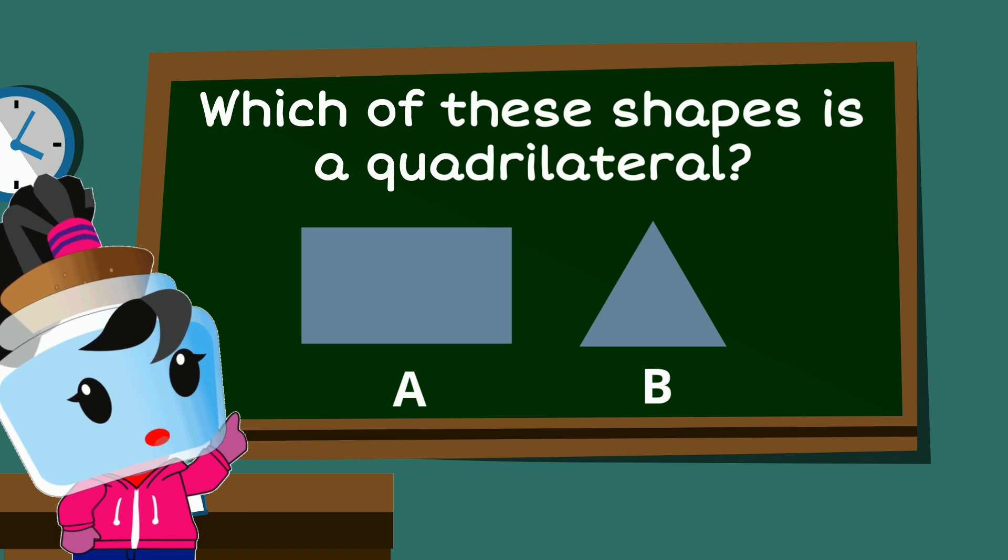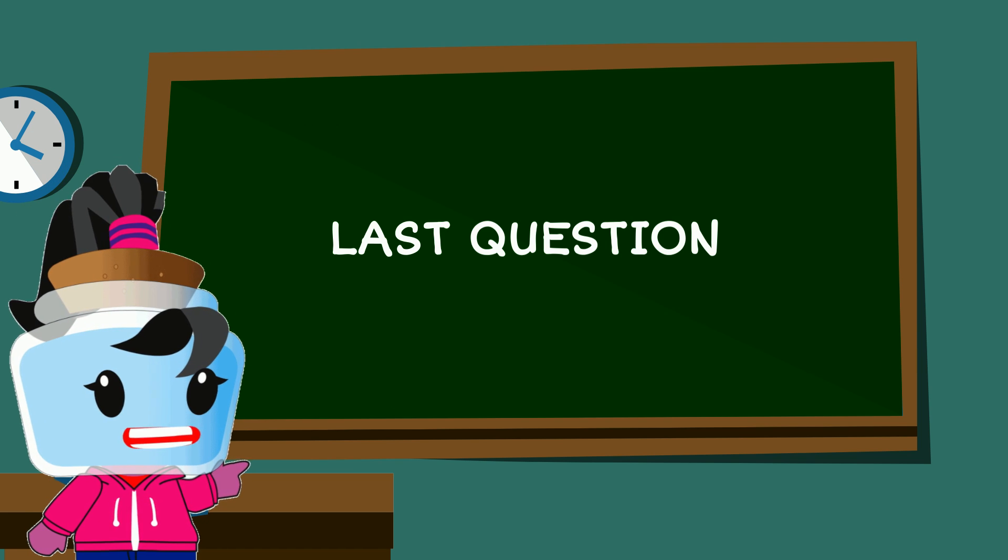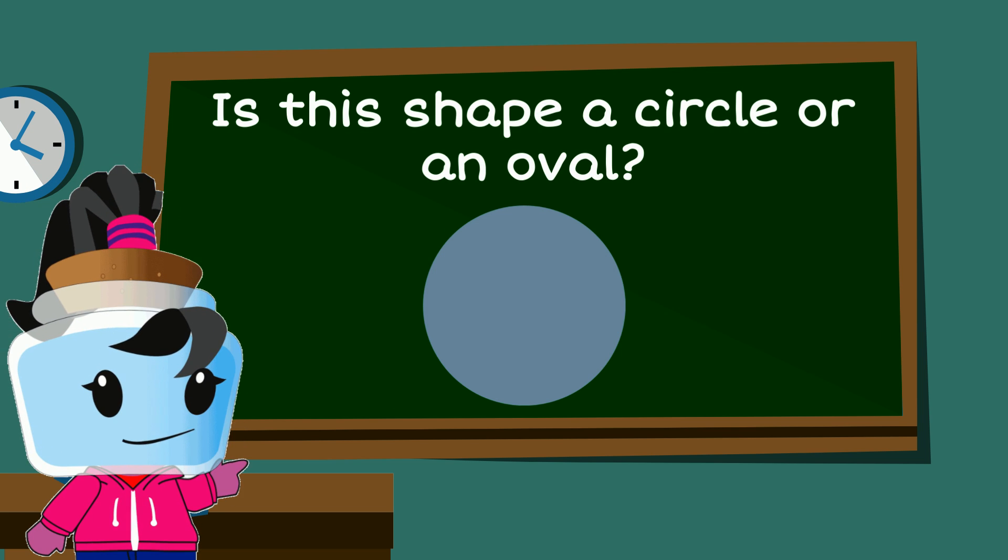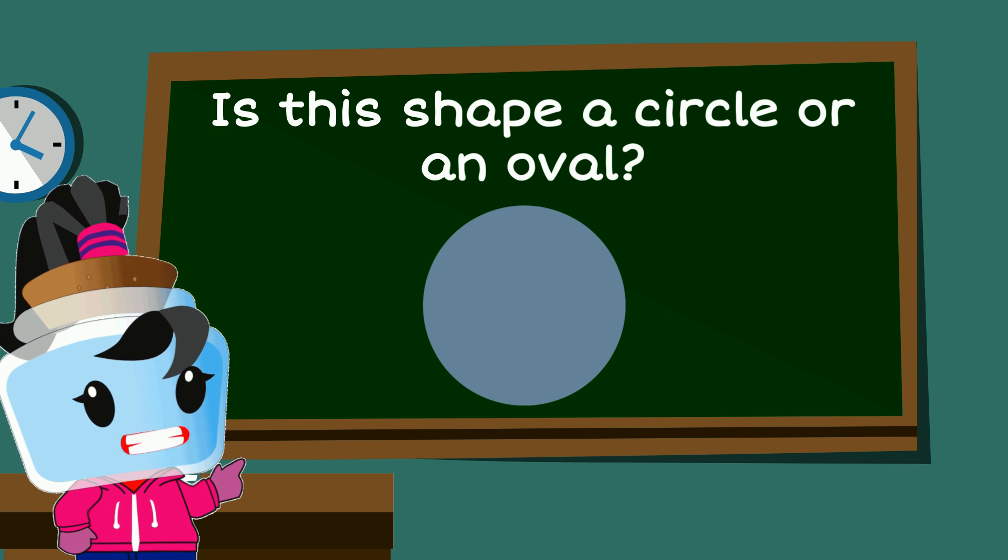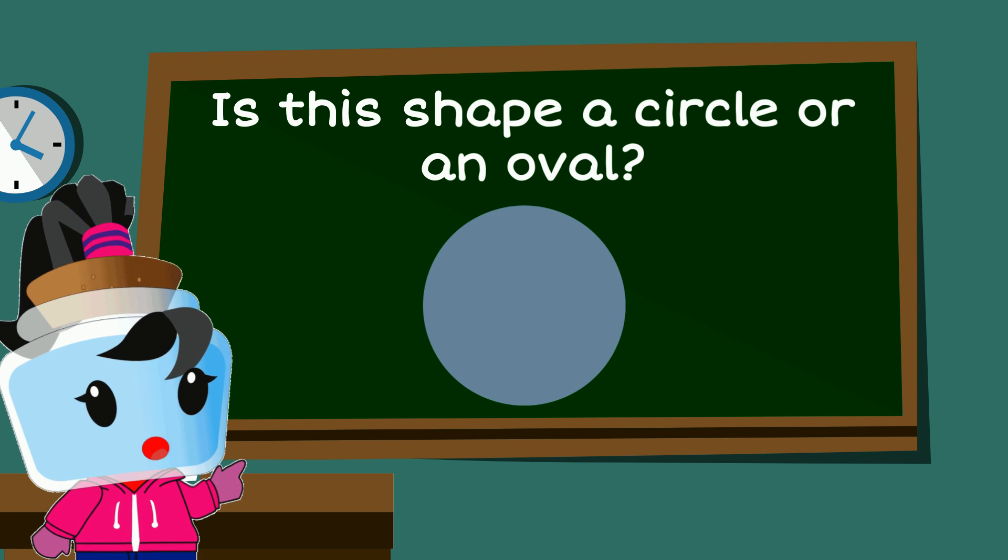That's right, shape A is a quadrilateral. Is this shape a circle or an oval? That's right, it's a circle. Well done!